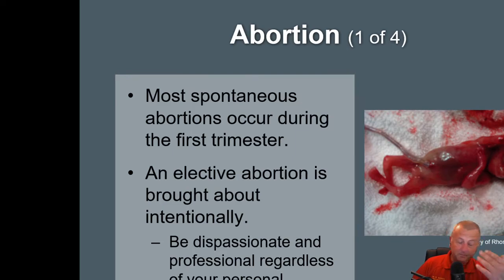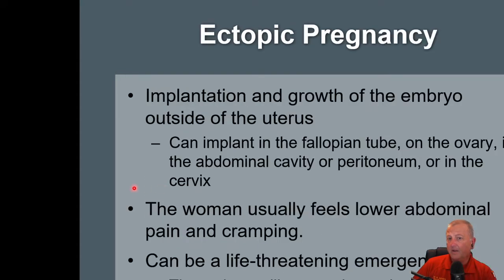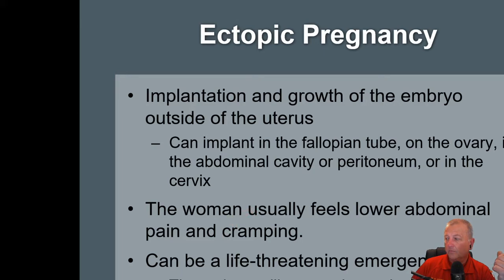Spontaneous abortion, also known as miscarriage, you're usually going to see in the first trimester. We talked about ectopic a minute ago. Any time this happens outside the uterus, 97% of the time you're going to see this in the fallopian tube. Lower abdominal pain and cramping — it is a life-threatening emergency.